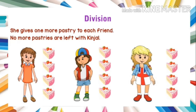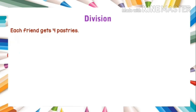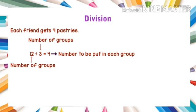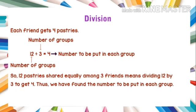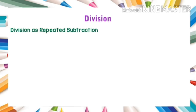Kinjal gives one more pastry to each friend and now no more pastries are left. Each friend gets four pastries. This can be shown as 12 divided by 3 equals 4. Here, 12 is the total number of items to be shared, 3 is the number of groups, and 4 is the number to be put in each group. So 12 pastries shared equally among three friends means dividing 12 by 3 to get 4.